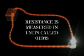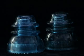Resistance is measured in units called ohms. Conductors, such as copper and gold, have low resistance. Insulators, such as glass and rubber, have very high resistance.